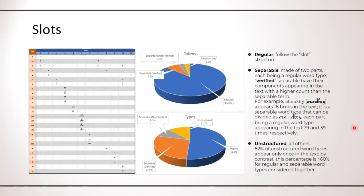And the pie chart in the middle shows how words align to this structure. I define the regular words as words that follow exactly the slot structure. This covers about 87% of tokens and 51% of word types. Separable words are words which can be divided into two parts and each part is a regular word itself. This corresponds to about 10% of tokens, 37% of types.